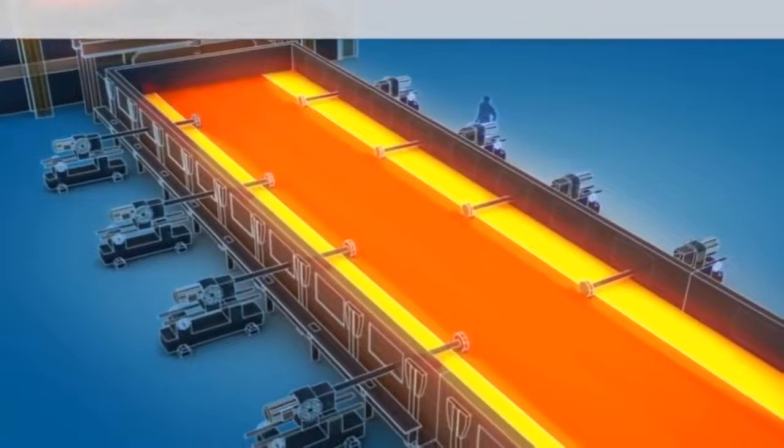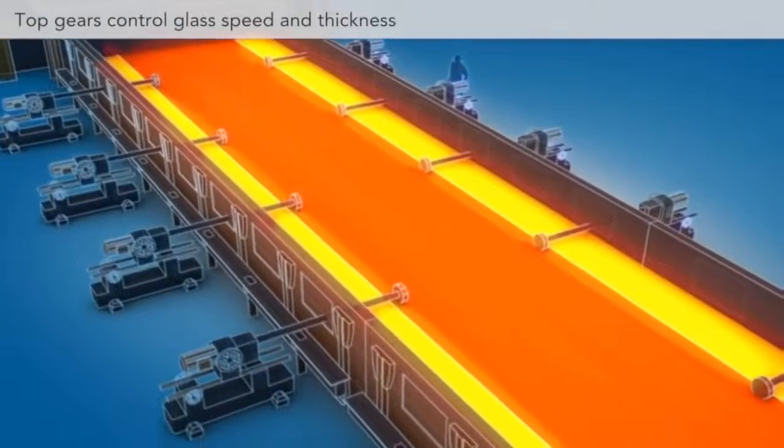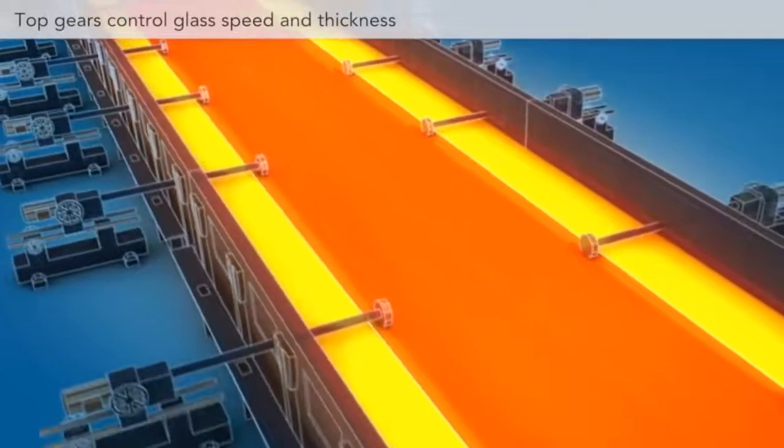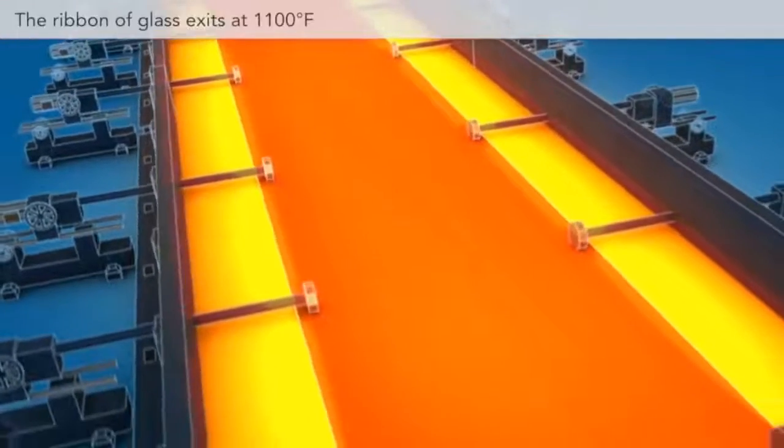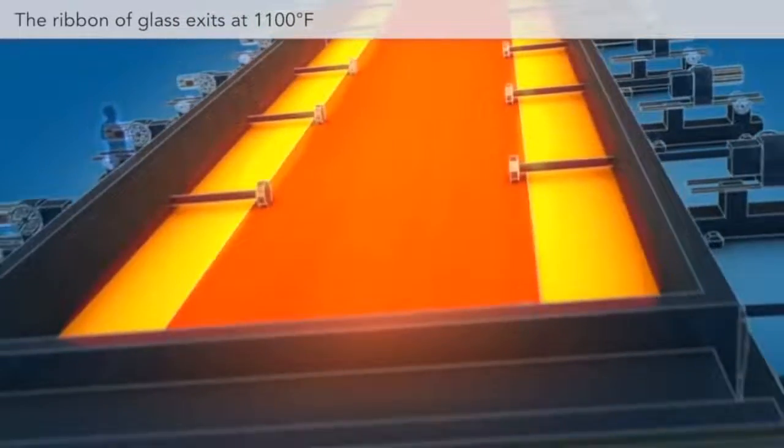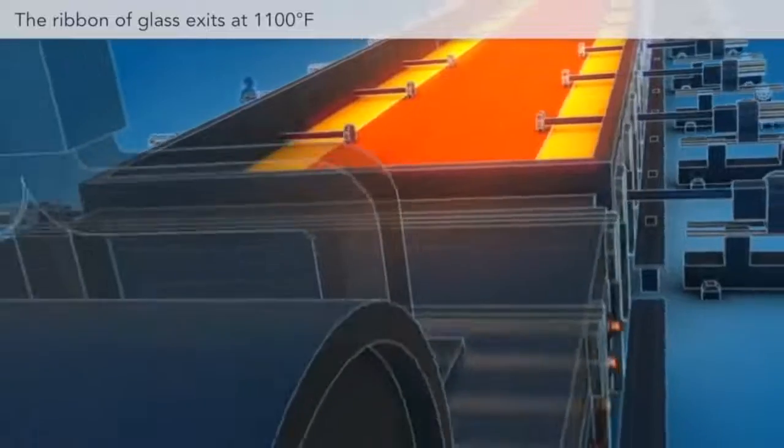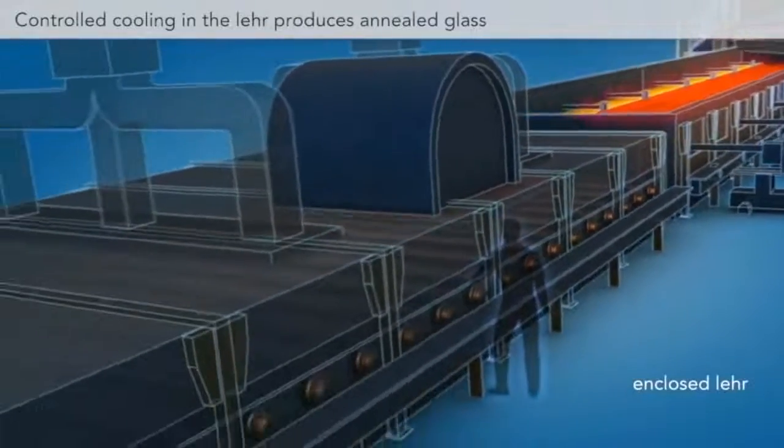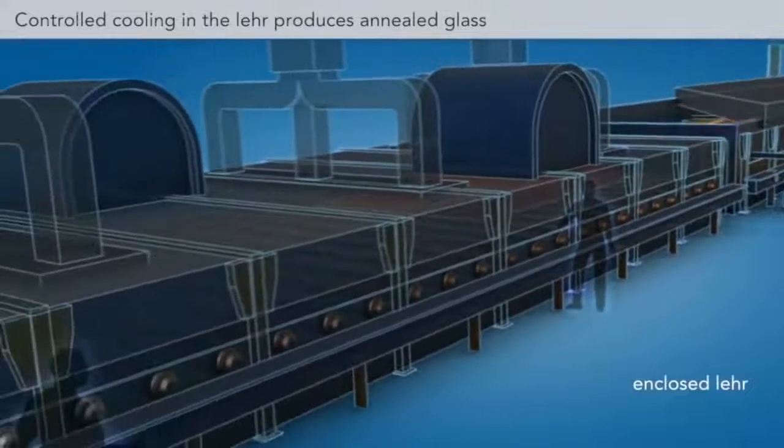This process is called annealing. It relieves the glass of internal stresses. The rate of cooling is crucial to the success of the final project. The glass emerges from the lehr at room temperature as a continuous ribbon. It is flat, fire finished on top, and has smooth parallel surfaces.